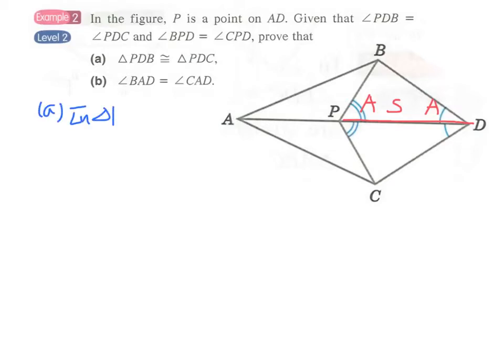In triangle PDB and triangle PDC, angle PDB equals angle PDC. This is the first given pair of equal angles.